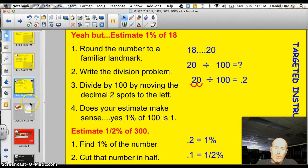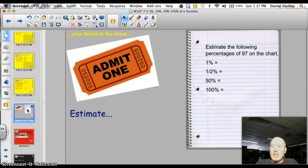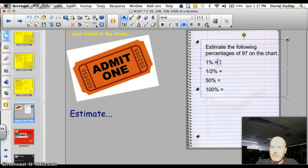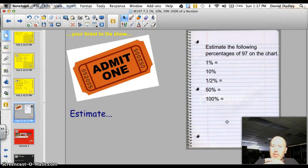It's just one problem with, no, one problem with, let's see, I'm going to add one more, five parts. Estimate the following percentages of 97 on this chart. What is, estimate what 1% would be, 10%, a half percent, 50%, and 100%. All right, thanks.